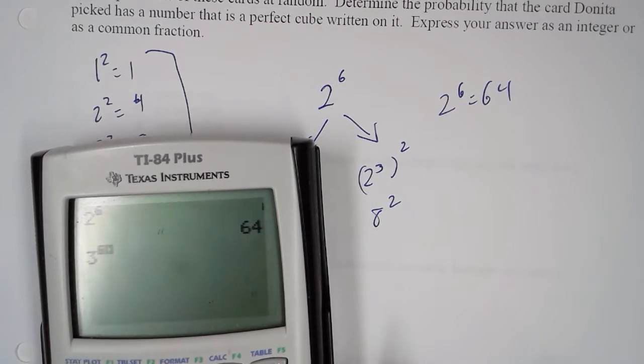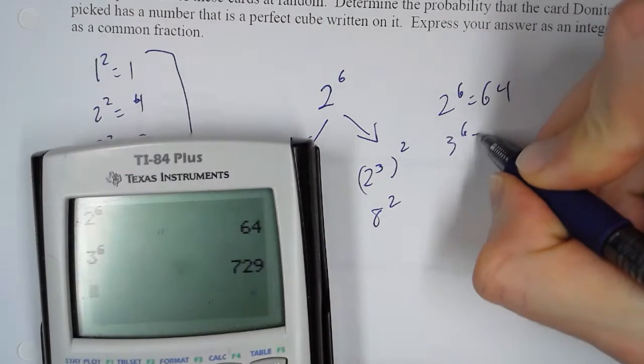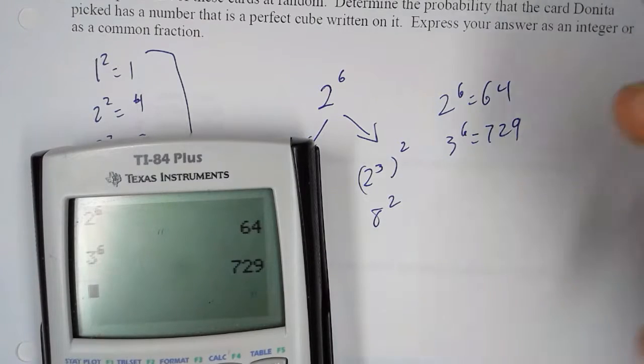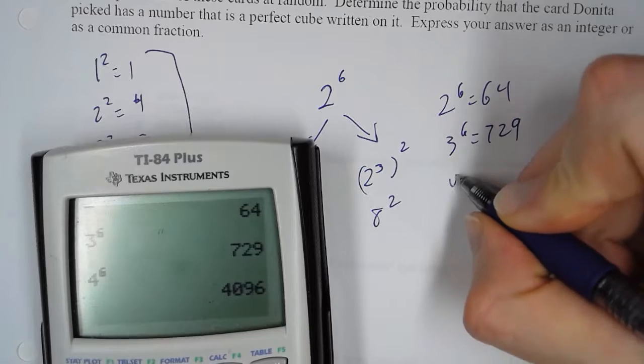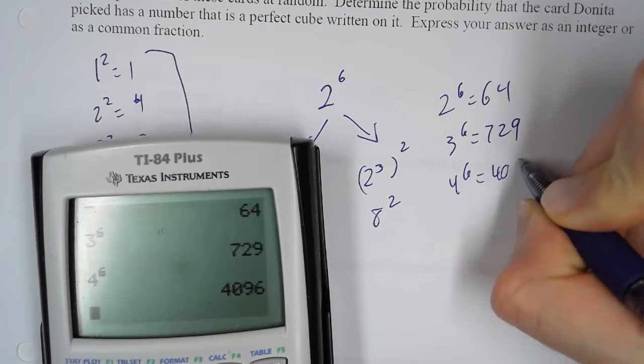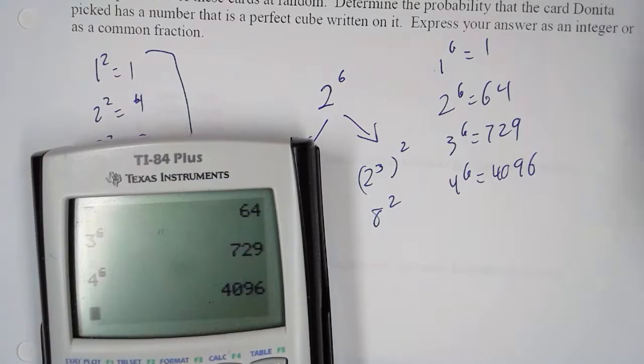3 to the sixth is 729. That's less than 10,000. 4 to the sixth, that's 4096. Now, of course, 1 to the sixth, we can't forget that, is 1.